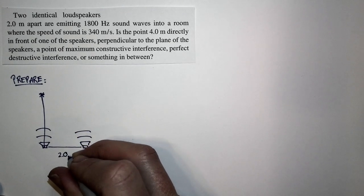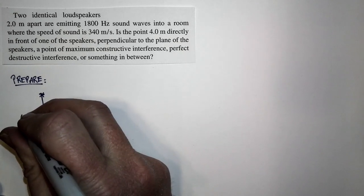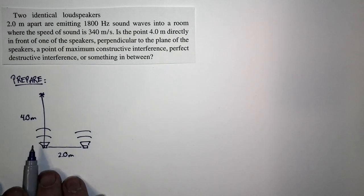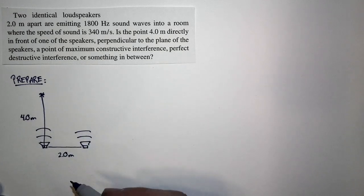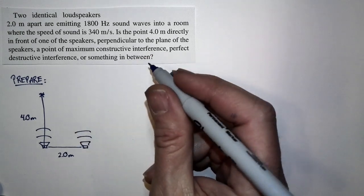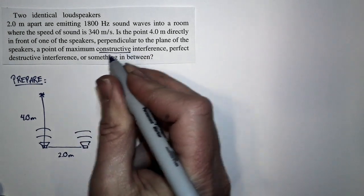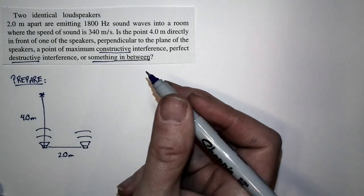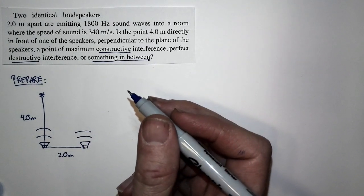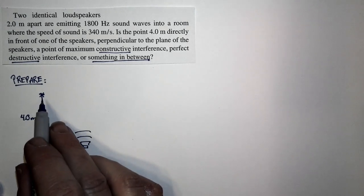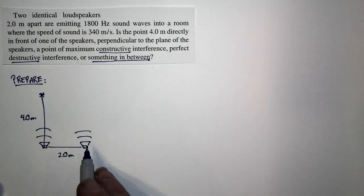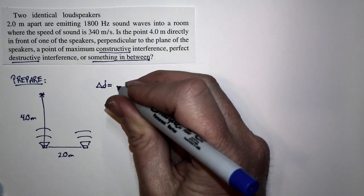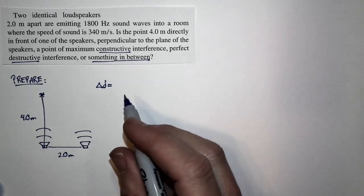So this distance is 2.0 meters. This distance is 4.0 meters. We have the sound from this speaker and the sound from this speaker overlapping at this point. The question is, is it constructive interference, destructive interference, or something in between? Fundamentally, this is a question of the difference in the travel distance from the two speakers.